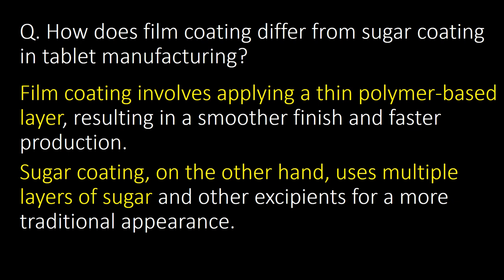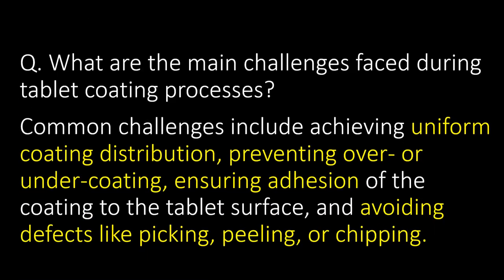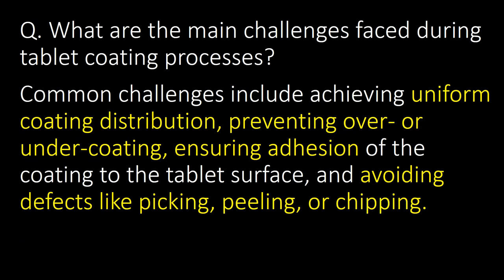How does film coating differ from sugar coating in tablet manufacturing? Film coating involves applying a thin polymer-based layer, resulting in a smoother finish and faster production, whereas sugar coating uses multiple layers of sugar and excipients for a more traditional appearance.